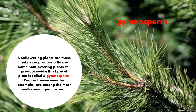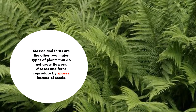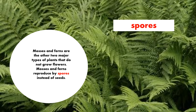So you have an angiosperm and now you have a gymnosperm. Mosses and ferns are the other two major types of plants that do not grow flowers. Mosses and ferns reproduce by spores instead of seeds — so 'spores' is your next word. You now have angiosperm, gymnosperm, and spores.